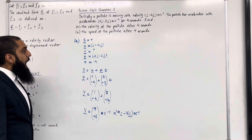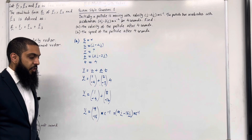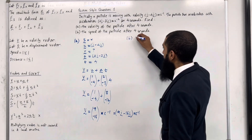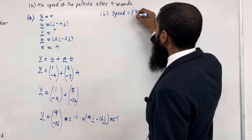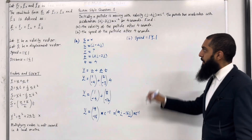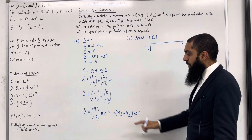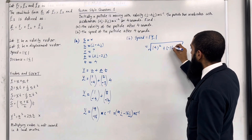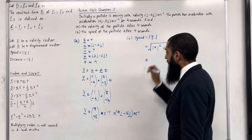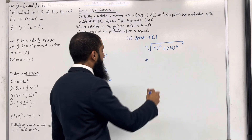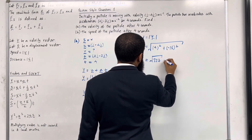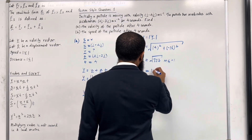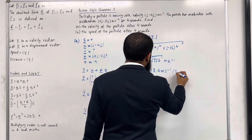Let's move on to part B: find the speed of the particle after 4 seconds. Speed is a scalar quantity. To work out the speed, we write speed equals the magnitude of the velocity vector after 4 seconds. So speed equals the square root of 9 squared plus (−16) squared. Putting this into the calculator gives square root of 337 metres per second, which rounds to 18.4 metres per second to three significant figures.